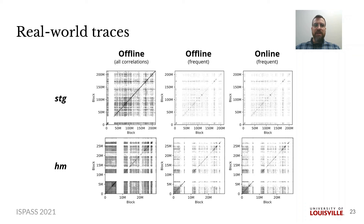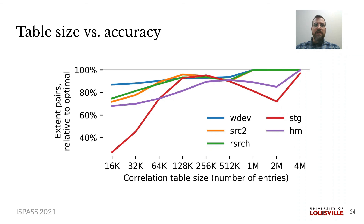Here are the last two real-world traces, STG and HM. In this slide, I want to show a numerical assessment rather than the previous qualitative visualizations. Offline analysis using FIM provides us accurate frequency data of all extent correlations. From this, we can construct the optimal solution of correlations that fit into a synopsis table of any size. We ran our framework using a range of table sizes and compare the collected correlations versus the optimal solution. Notice how, in general, the quality is low for a small table and improves as the table size increases. For a couple of workloads, STG and HM, which have a long tail of infrequent correlations, the optimal solution compares more favorably as less frequent correlations are evicted from our Tier 1 table.